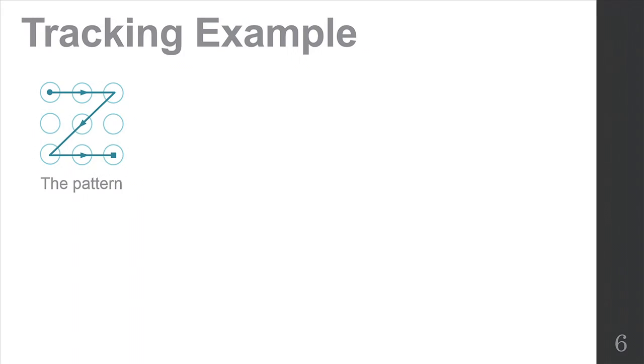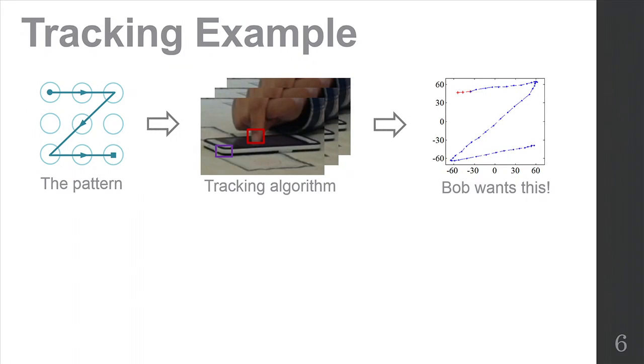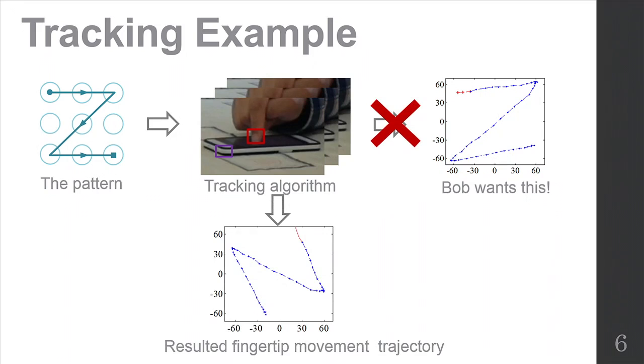Take this pattern for an example. After the tracking algorithm, we expected that it can output this trajectory. But as a result, it outputs this because of the viewing angle. So Bob must transform the fingertip movement from the camera's perspective to the user's perspective.